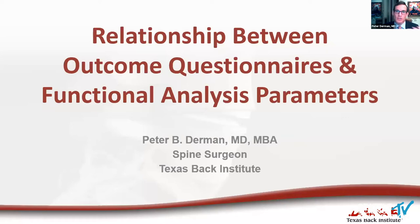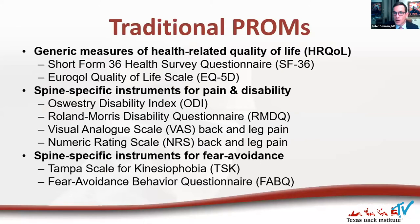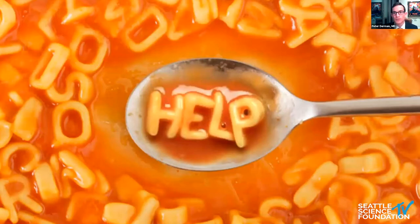We're going to transition to the relationship between patient reported outcome measures and the functional analysis parameters we measure in our lab. Here's a smattering of traditional PROMs, categorized into different groups: generic measures of quality of life like the SF-36 and EQ-5D, spine-specific measures like ODI, Roland Morris, VAS or NRS scores, and spine-specific instruments for fear avoidance like the Tampa Scale and FABQ. There's also PROMIS, which is getting a lot of press. It becomes an alphabet soup of measures — which to use, at what time points, and really, what do they mean?